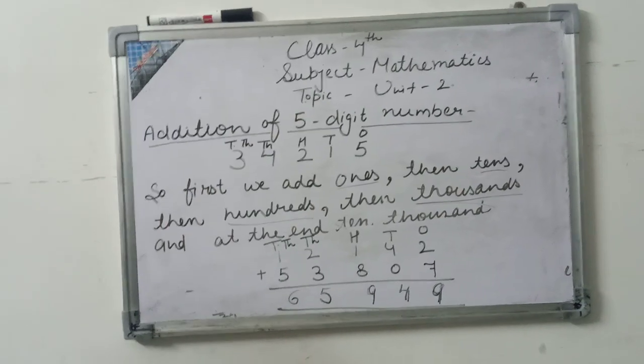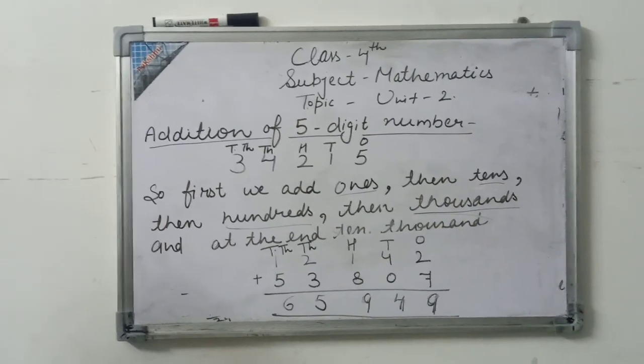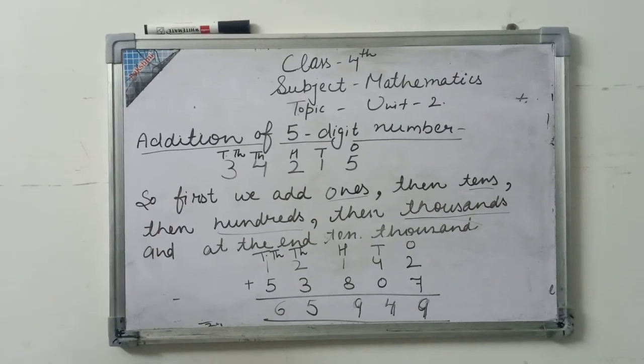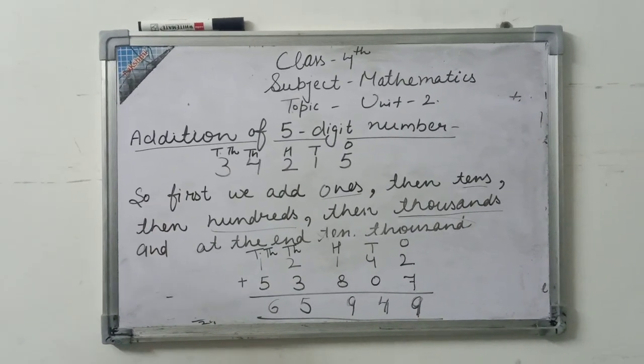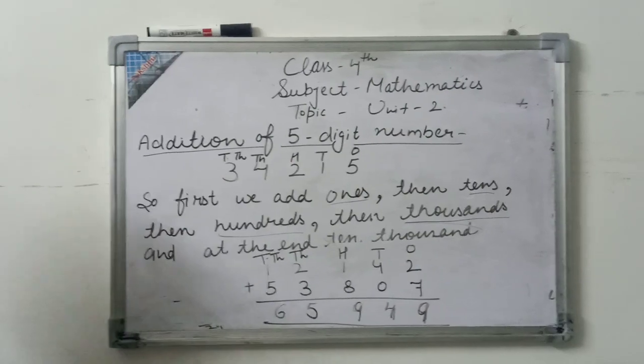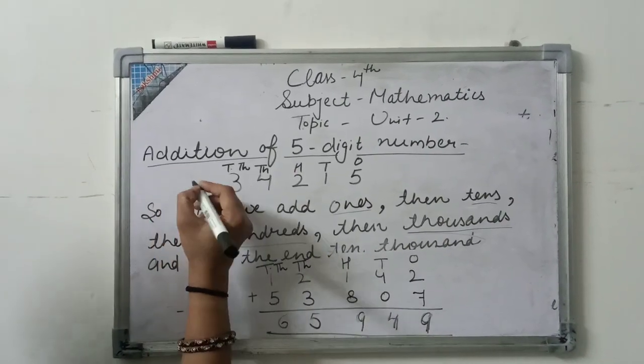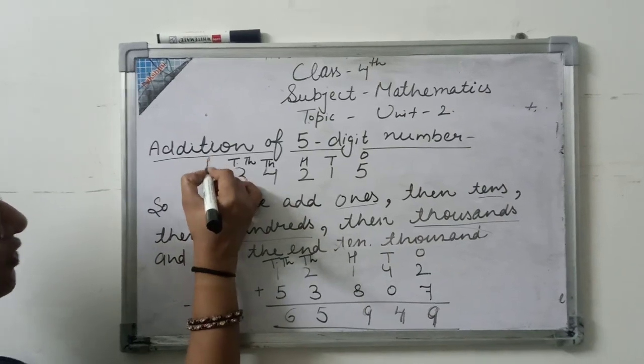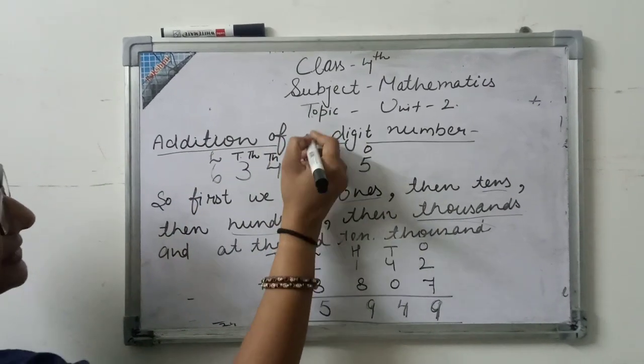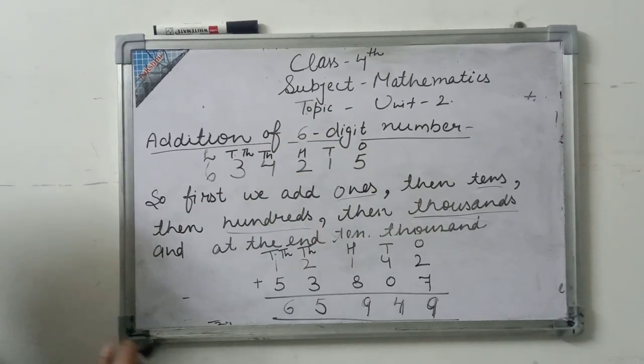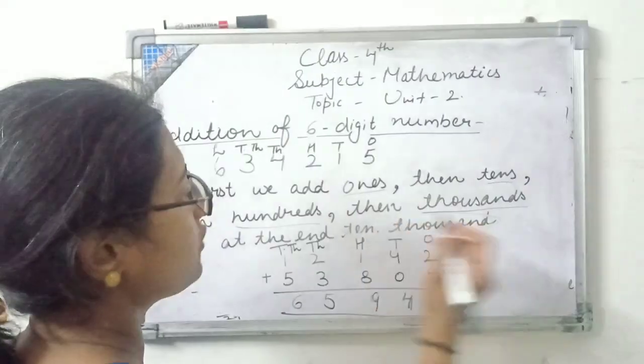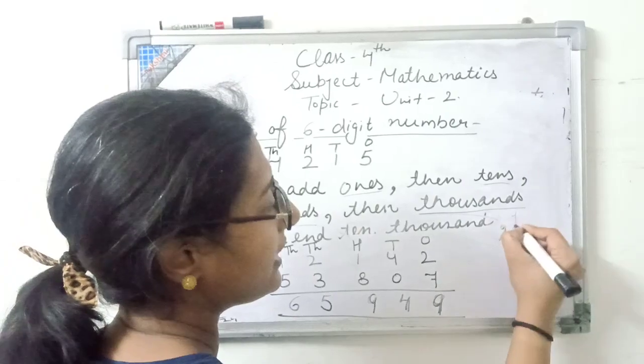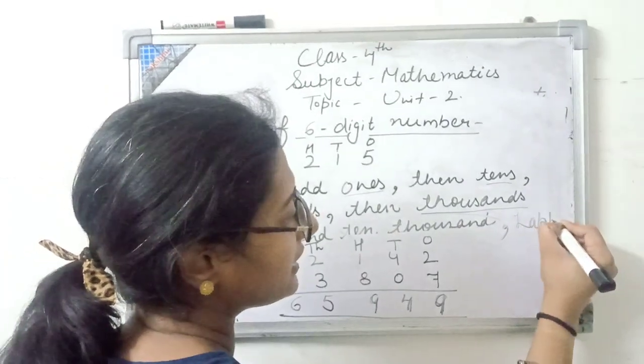Similarly, we can do addition of 6-digit numbers. In 6-digit numbers, we also have lakhs place. Like if we add 6 here, what place would that be? Lakhs. Okay? So after 10,000th, which will we add? The digit at lakhs place.